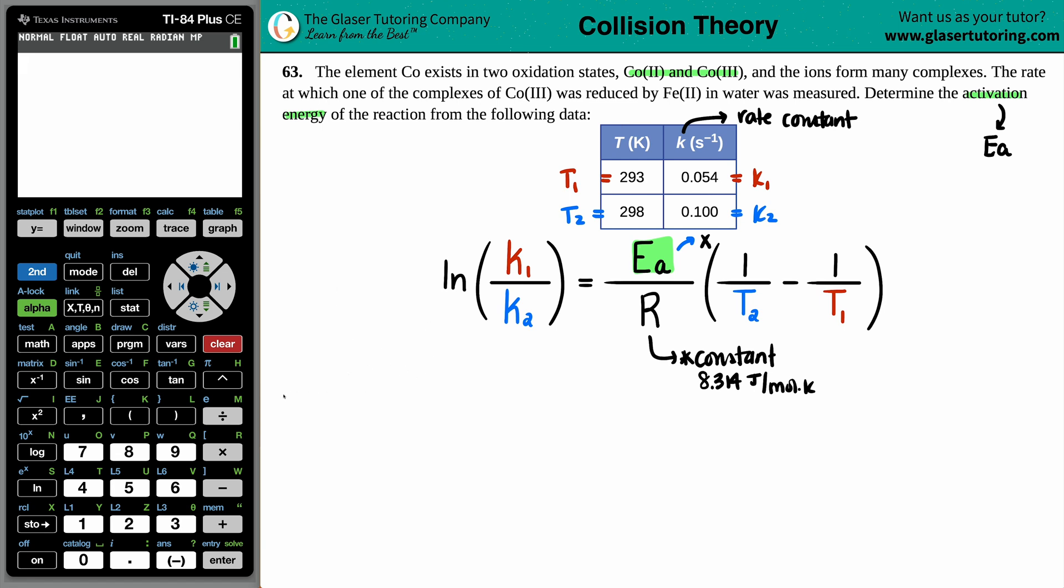So let's get started. LN of K1 over K2, so 0.054 divided by 0.100, and this equals my EA over R, so X over 8.314, times 1 over the temp minus 1 over the other temp.